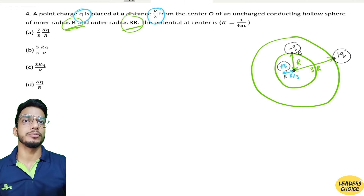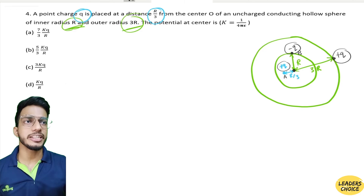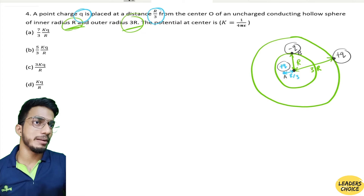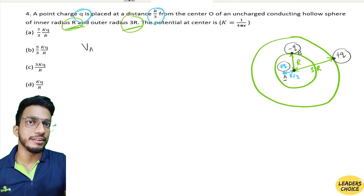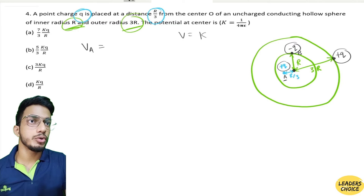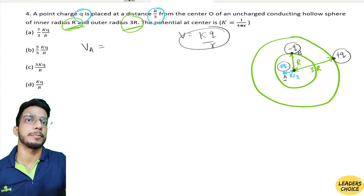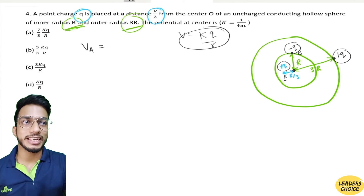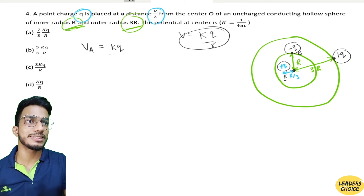The net potential at the center comes from three contributions, which we add since potential is a scalar. First, V_A — the potential due to the +q charge at point A. Using V = kq/r, V_A = kq/(r/3) = 3kq/r.